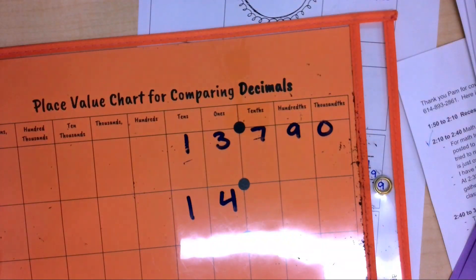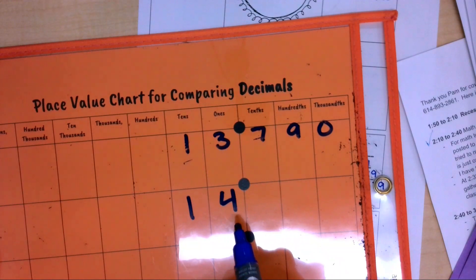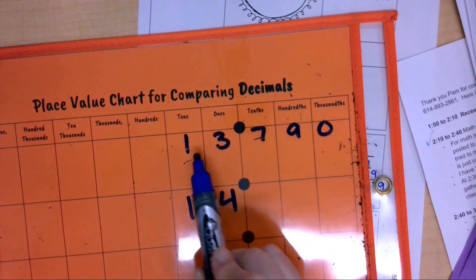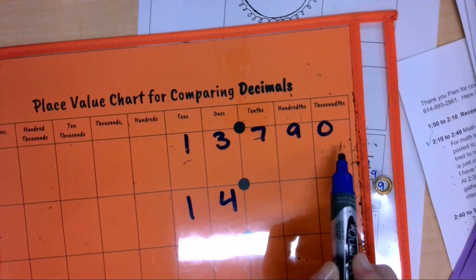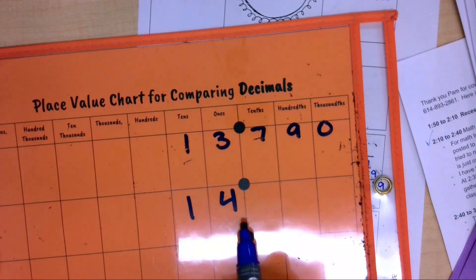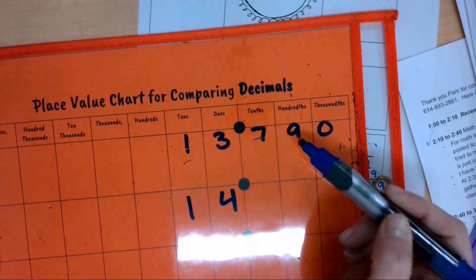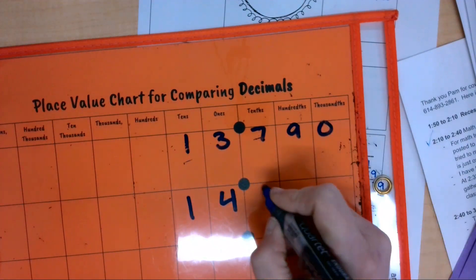For the next problem, we are comparing, and what I like to do again, I like to use my place value chart and I like to look at these different values up here. So I have my number here and I have my number there. Then I can compare by each of the place values. I can add zeros as placeholders if I'd like.